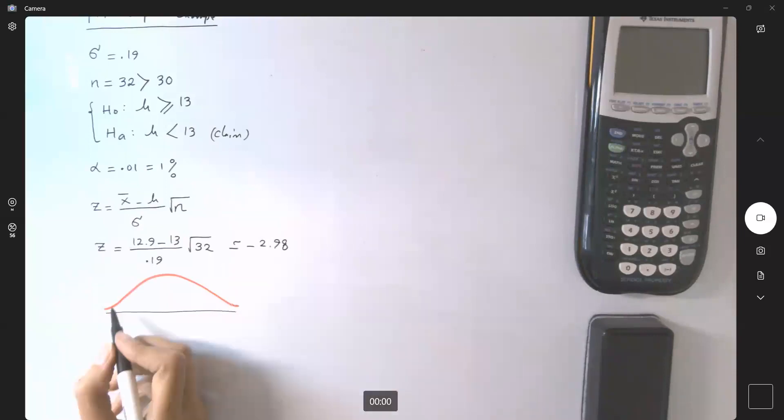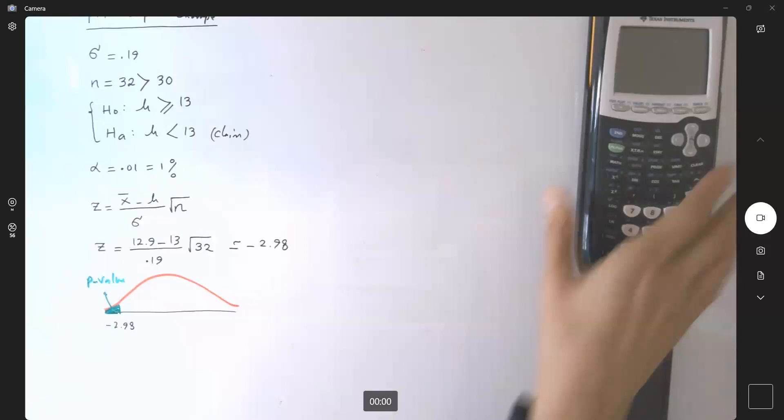Negative 2.98 is going to sit right here, negative 2.98. So the area on the left hand side is your p-value. So let's calculate this value. What is this probability here?